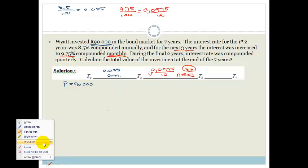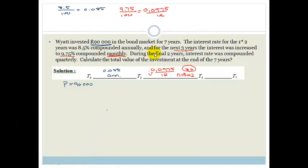For the final period, the interest rate stays at 9.75% but is now compounded quarterly. So the interest is 0.0975 divided by 4. For the final 2 years, because it's compounded quarterly, N is 2 times 4, which equals 8.